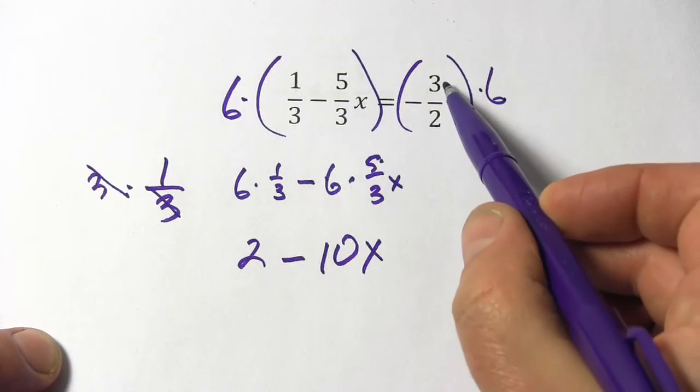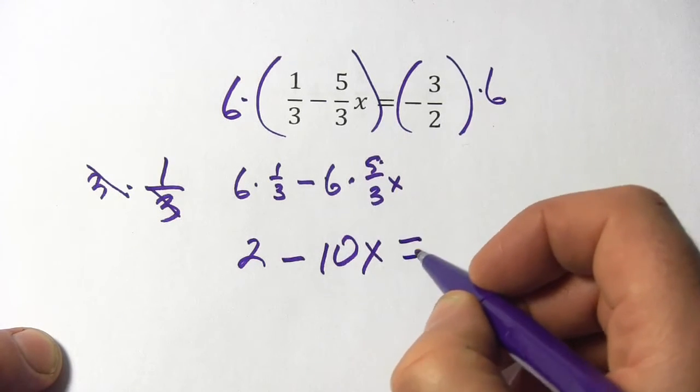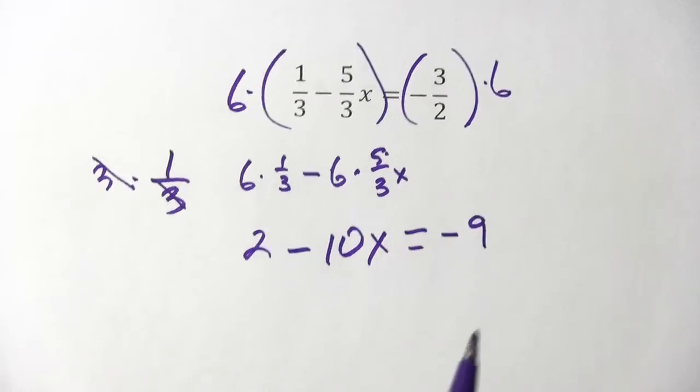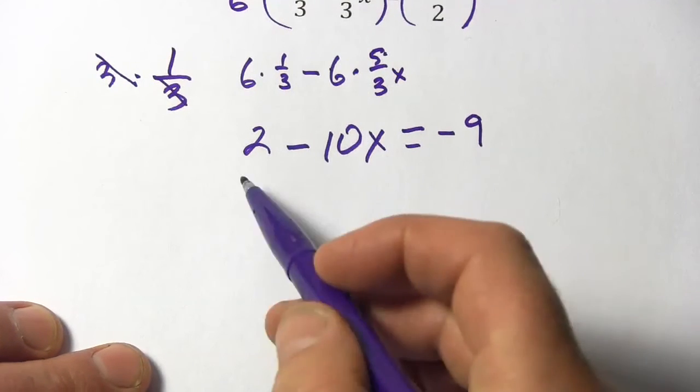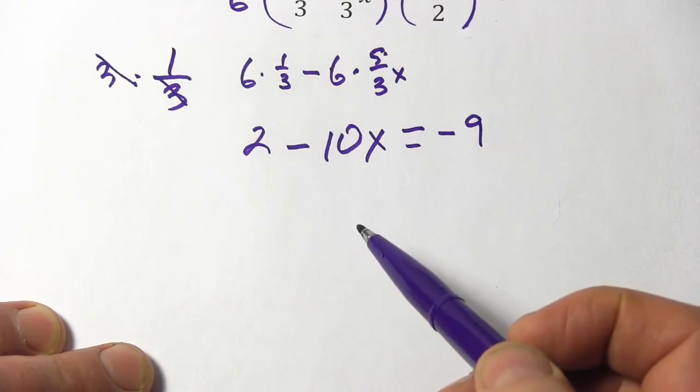And then over here, 6 times 3 is 18 divided by 2 is 9. So this is negative 9. So we've gotten rid of all the fractions, and that makes this a much easier equation to solve.